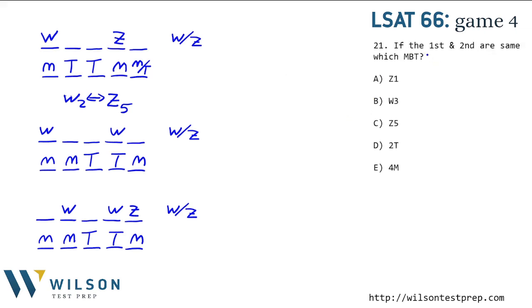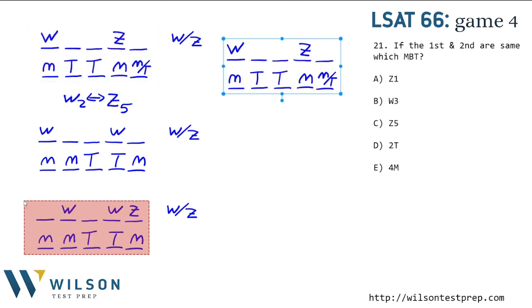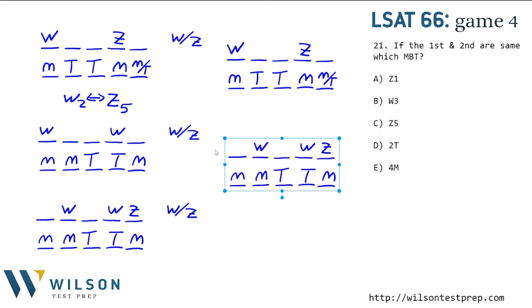Number 21 says, if the first and second solo are played by the same soloist, which must be true? So let's consider the different scenarios we could have. The difference between the second and third world is negligible in this case, because if the first and second are the same, these are W, W here, W, W here. So we only have to look at two of these three. And if W is second, Z is fifth.